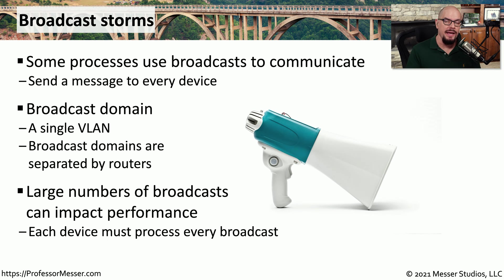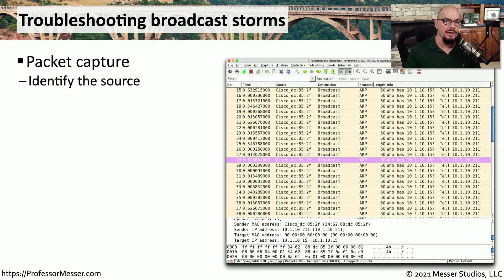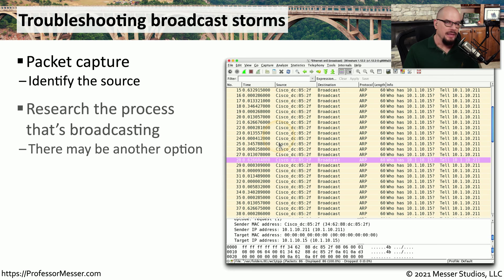If you have one or two broadcasts a second, that's not much of a problem. If there are 100 or 1,000 broadcasts in a single second, you will certainly see performance problems on your network. One of the best ways to identify how many broadcasts are occurring and where they're coming from is to take a packet capture. This packet capture is showing a large number of broadcasts — these happen to be ARP, or address resolution protocol — and you can see the timestamps between each broadcast and information about the type and source of the broadcast.